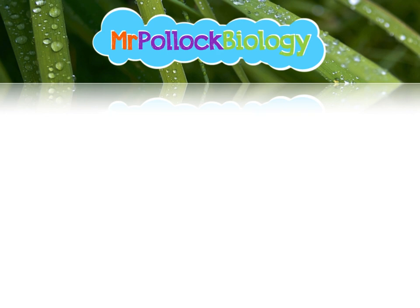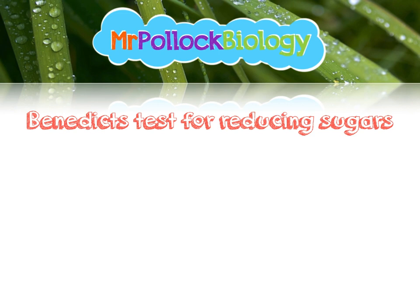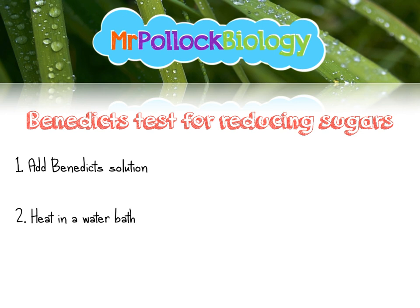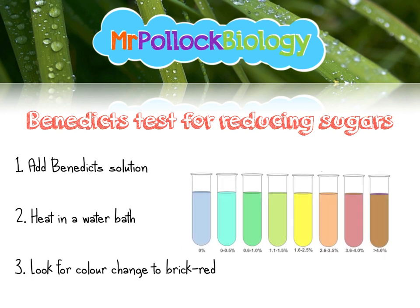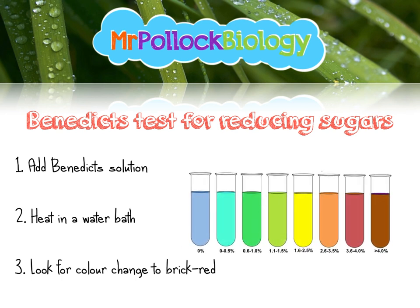Secondly, we're going to look at how to test for reducing sugars such as glucose. For your A-level specs, you don't need to know what is a reducing sugar and what is a non-reducing sugar, so just worry about carrying out the tests. For a reducing sugar, you're going to add Benedict's solution, heat it in a water bath, and then look for a colour change from blue to brick red. This can be a semi-quantitative test — the closer to green and yellow, the less sugar; the closer to red, the more sugar.